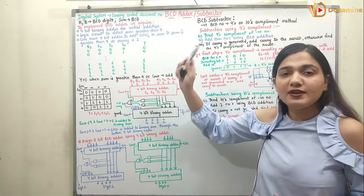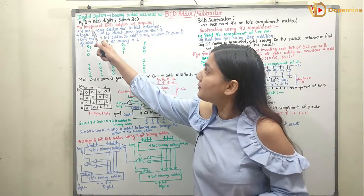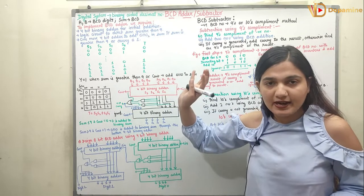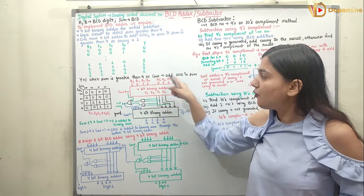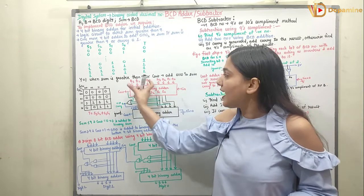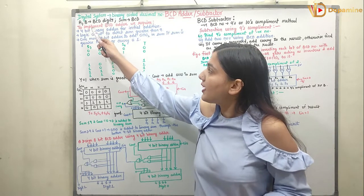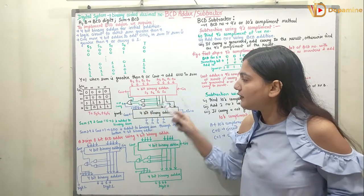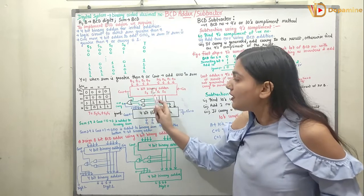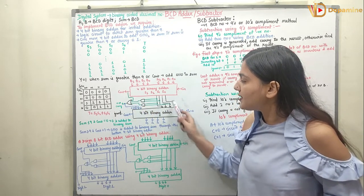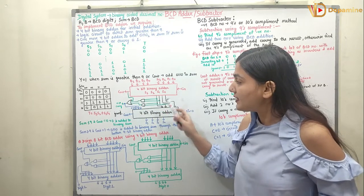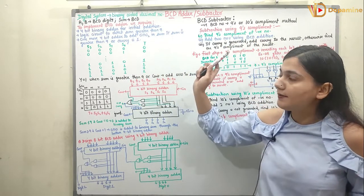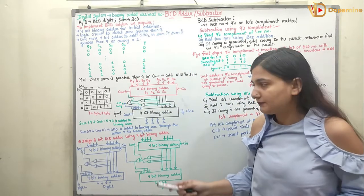We have some steps to implement the BCD adder. The first step is that we use a 4-bit binary adder for the initial addition. This 4-bit binary adder gives the initial addition of the two numbers. Next, I will have a logic circuit to detect if the sum is greater than 9. If the sum is greater than 9, I will use another 4-bit binary adder and add 0110 to the sum if the sum is greater than 9 or if the carry is 1.